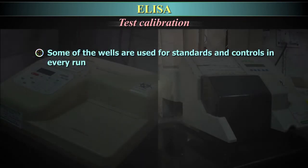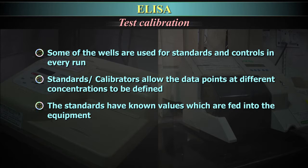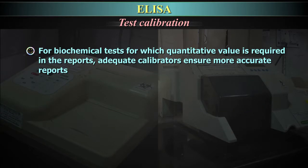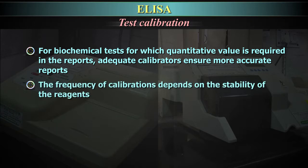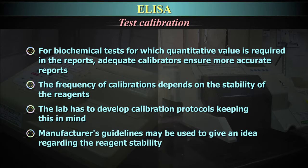Test calibration. Some of the wells are used for standards and controls in every run. Standards or calibrators allow the data points at different concentrations to be defined. The standards have known values which are fed into the equipment, and the equipment uses the data from these calibrators to plot the curves. For biochemical tests for which quantitative value is required in the reports, adequate calibrators ensure more accurate reports. The frequency of calibrations depends on the stability of the reagents. The lab has to develop calibration protocols keeping this in mind. Manufacturers' guidelines may be used to give an idea regarding the reagent stability.